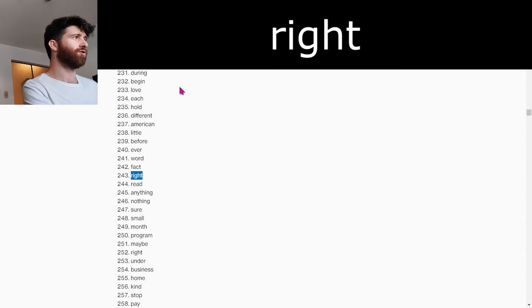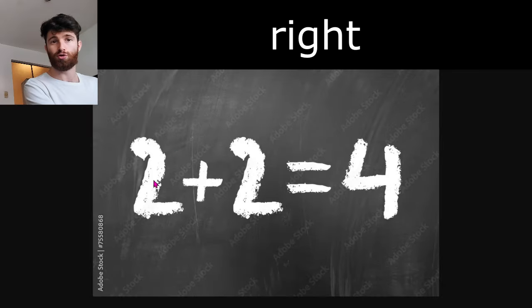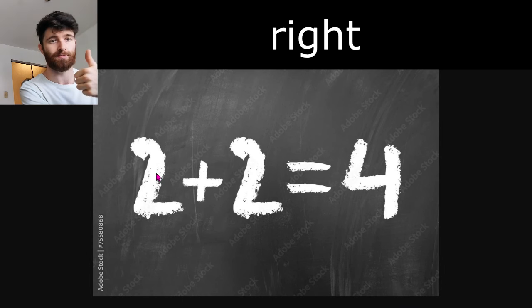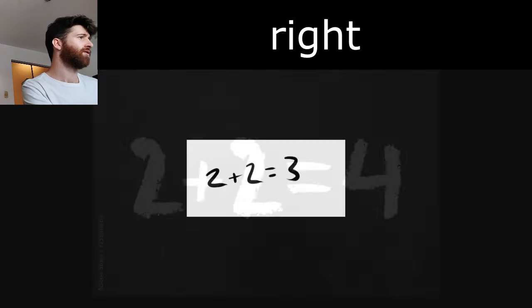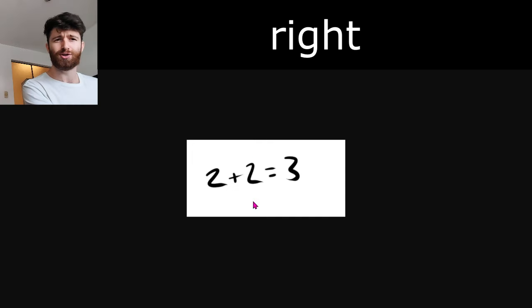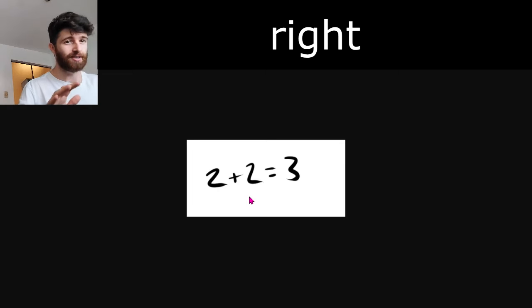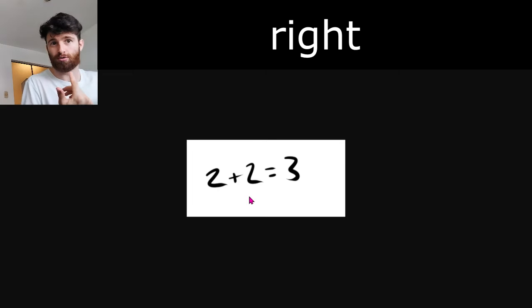The word 'right.' 2 plus 2 equals 4 — that's right. That's correct. 2 plus 2 equals 3 — that's not right. That is not right. That's wrong.